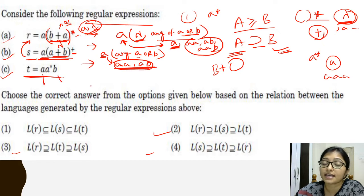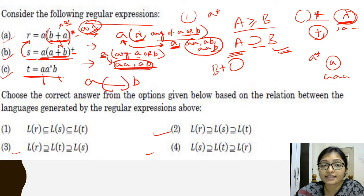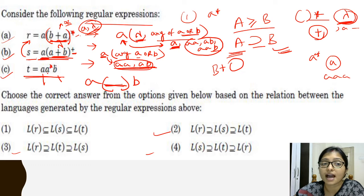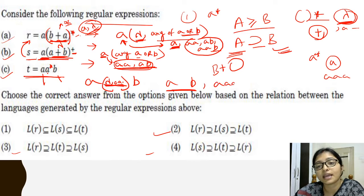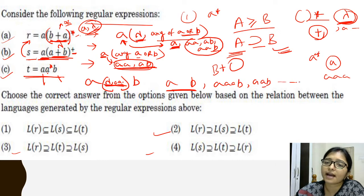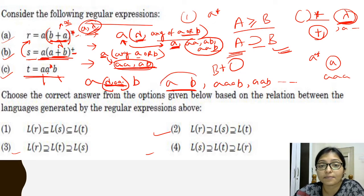Now consider expression T, where A and B are mandatory. Inside T there is A-star, which means it can be lambda or any combination of A. So A and B are definitely required, and after that it can be A, AA, AB, or any number of A's — but at least AB must be present.